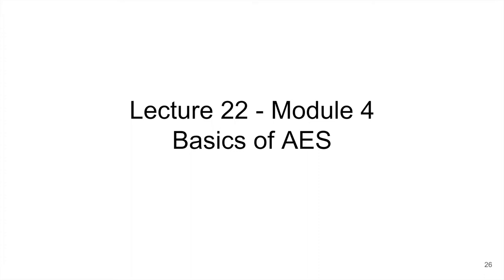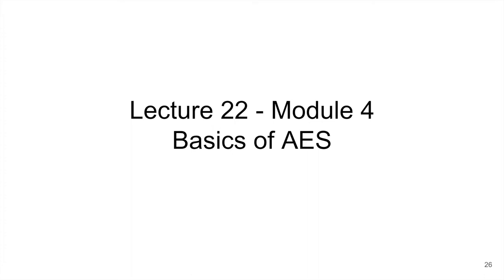I've already used that term Auger electron, but we're going to look at the spectroscopy of that. And the reason I'm grouping these two together is because they require a lot of the same instrumentation and often both XPS and Auger electron spectroscopy are obtained from the same instrument. Let's go through the basics of this Auger electron and where it comes from and how we use it to determine composition.